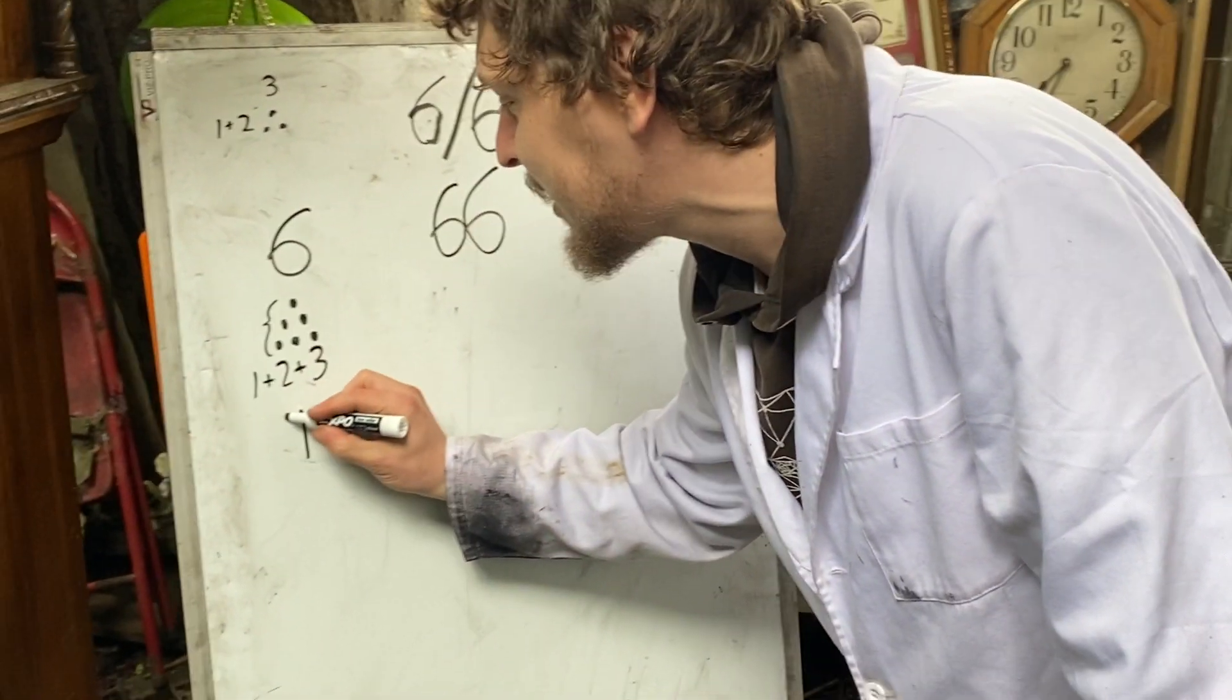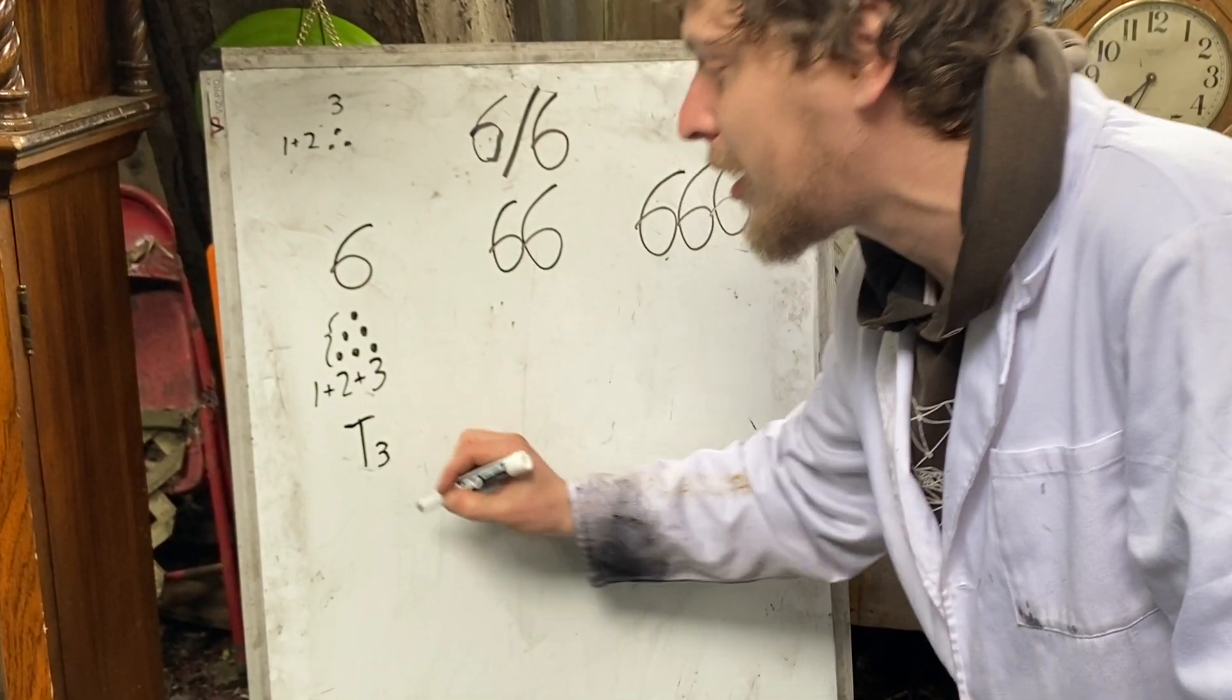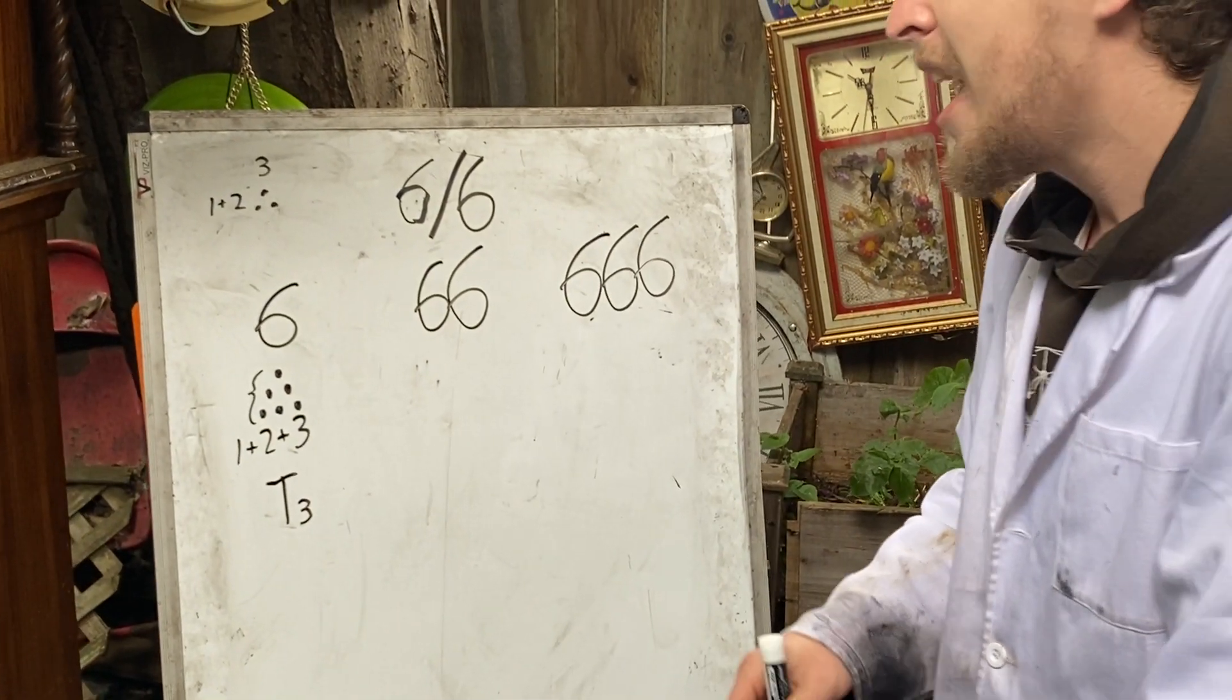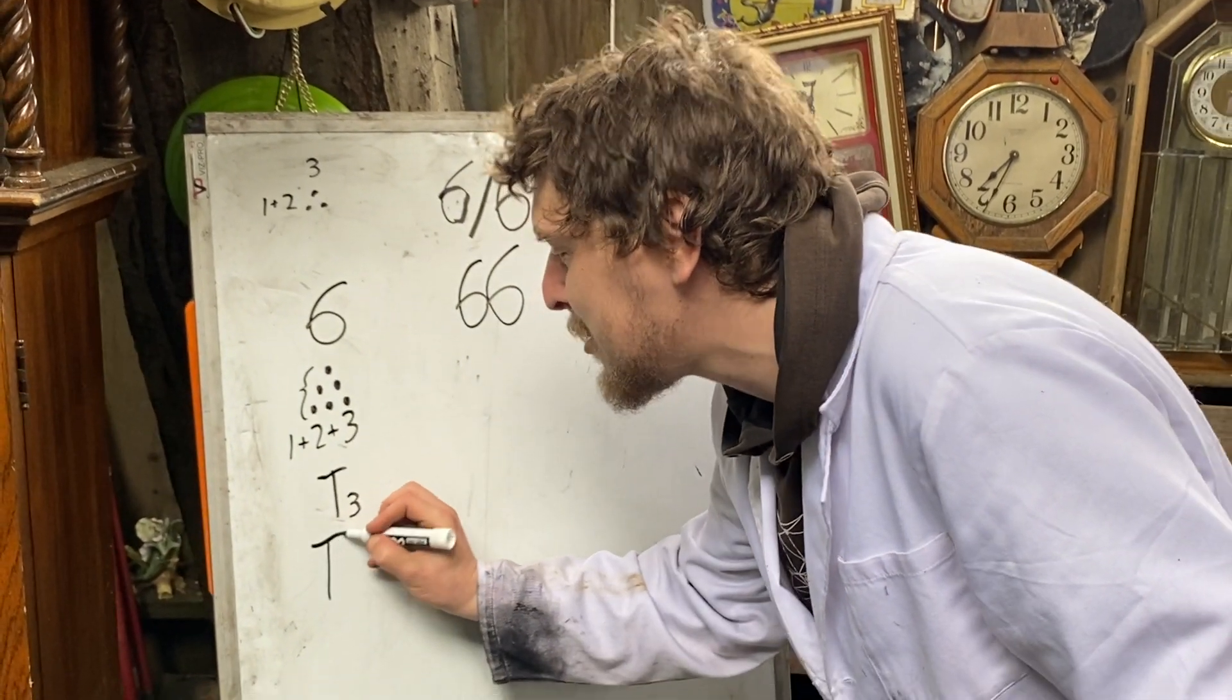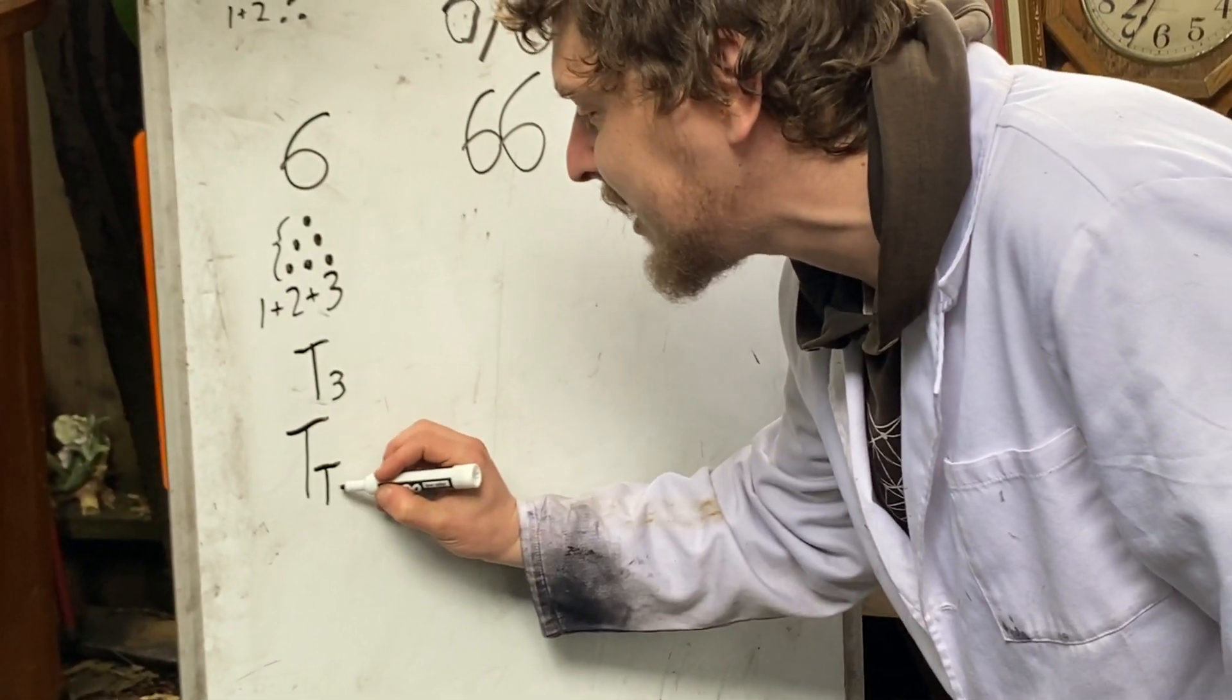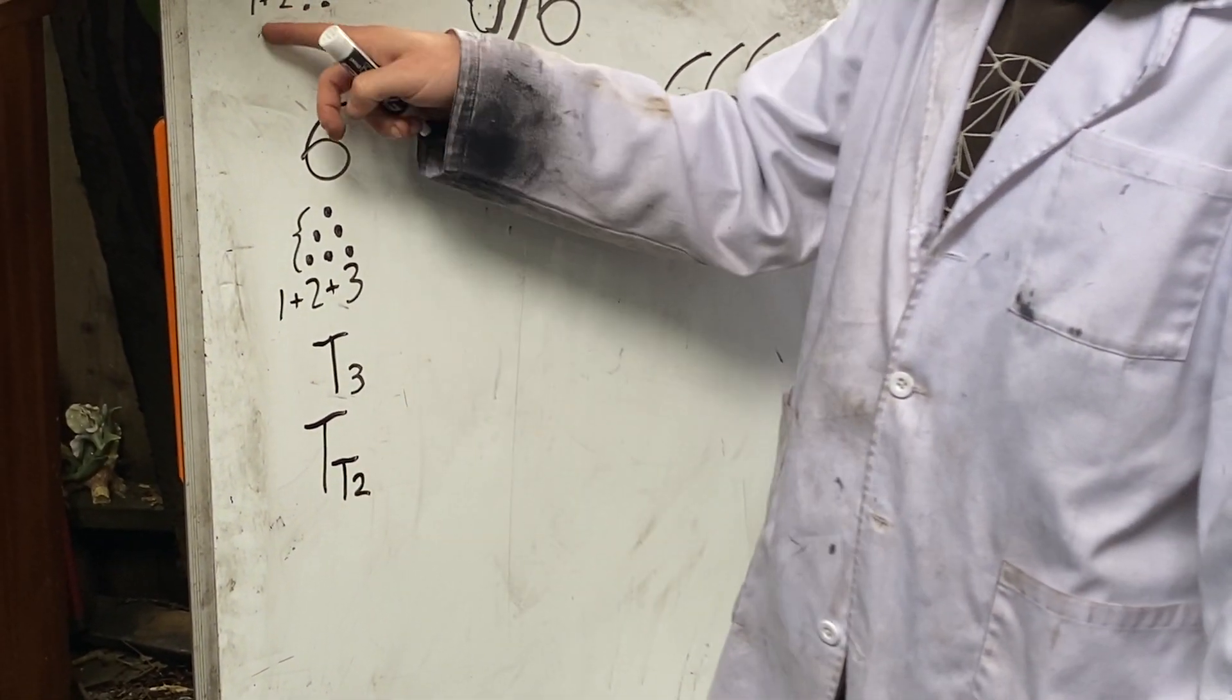We could write that it is the triangular number that is the third one with something like T and a little three. And we could even write that it's the triangular number whose index is the second triangular number because T2 is three.